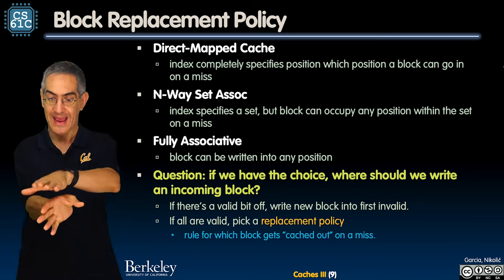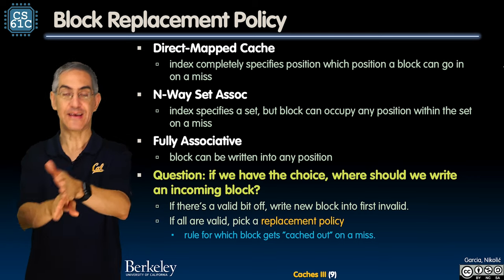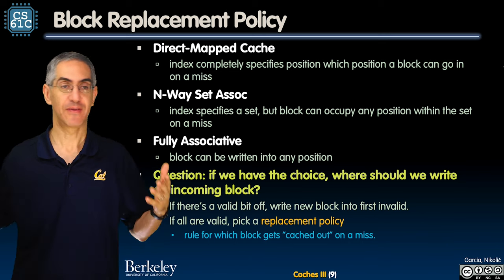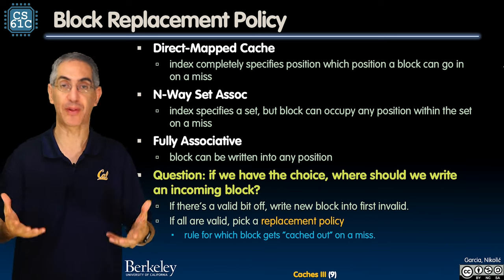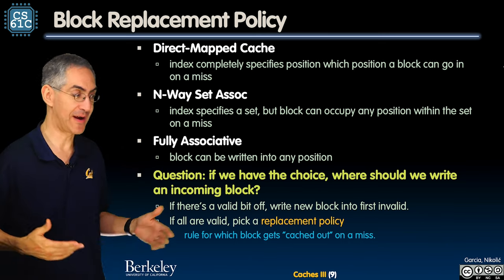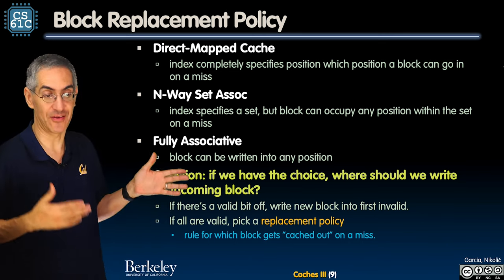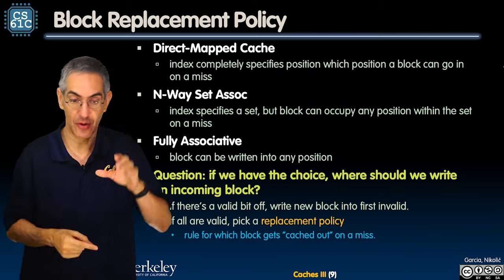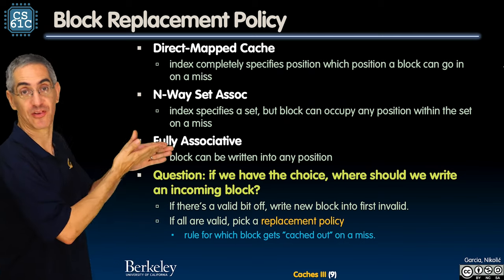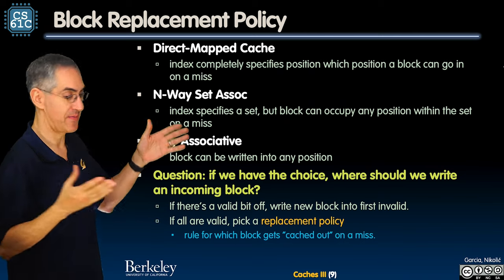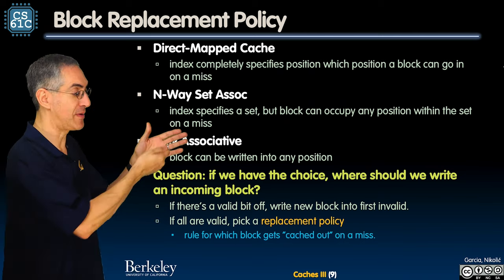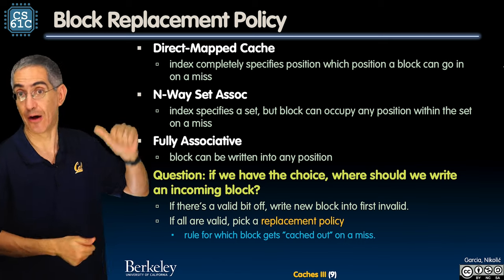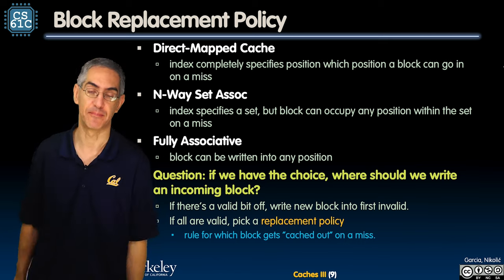When n is one and I'm direct mapped, it's clear what we do. If I have to replace a block, it's the block that used to be there. Because every address — every color, every blue — maps to the blue spot. And if this is the one that's supposed to be there and somebody else's tag doesn't match, get that guy out. Easy.